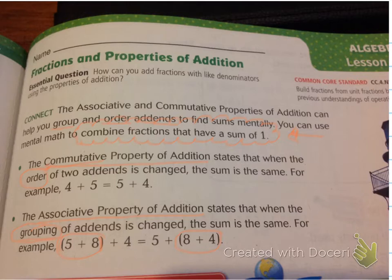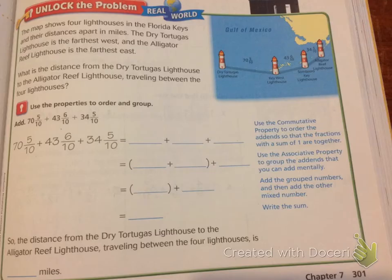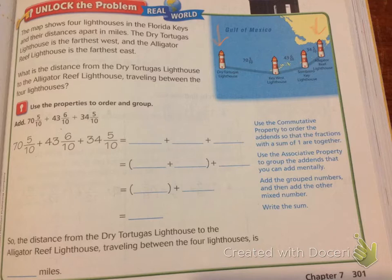Let's use both of those properties today. Remember our goal — we want to look for fractions that when we combine them, they make a sum of one. Check out this map near the Gulf of Mexico. The map shows four lighthouses in the Florida Keys and their distances apart in miles. The Dry Tortugas Lighthouse is the farthest west and the Alligator Reef Lighthouse is the farthest east. What is the distance from the Dry Tortugas Lighthouse to the Alligator Reef Lighthouse traveling between the four lighthouses? We'd have to add up all of these fractions that they give us, and now we're going to use the properties to order and group.